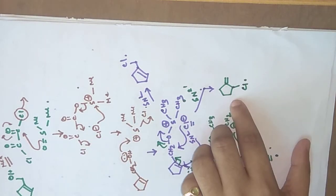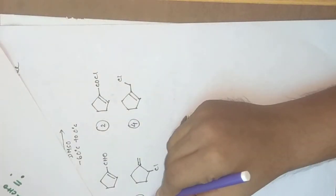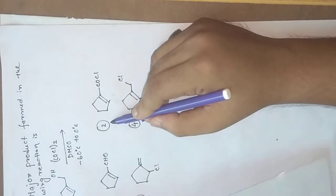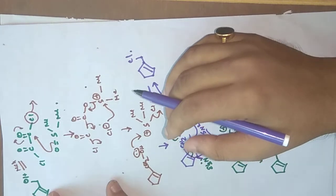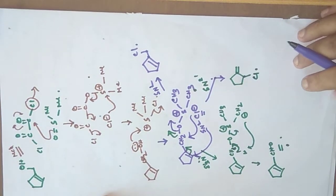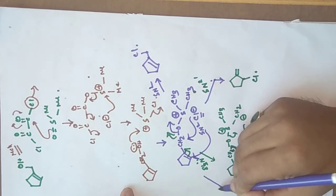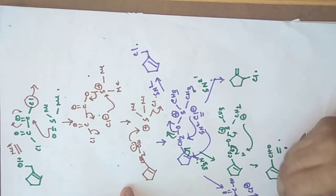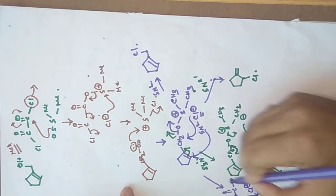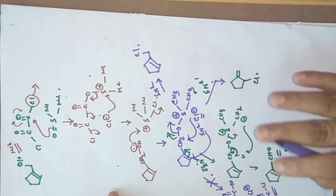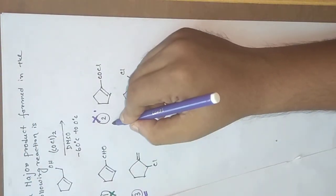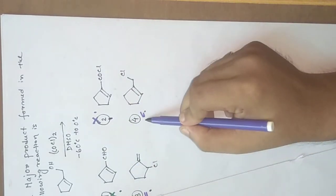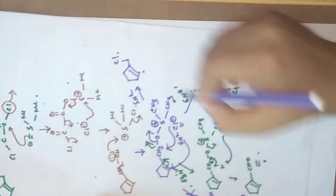So according to our mechanism, there are two types of product possible — product three and product four. There is no possible chance of product two. Why is product two not possible? Because in Swern oxidation, only aldehyde is generated, there is no generation of acid. So that type of compound is not generated. The chlorination reaction does not occur because Swern oxidation produces no acid. So answer one is wrong and answer two is wrong. Therefore, two products are possible: three and four.